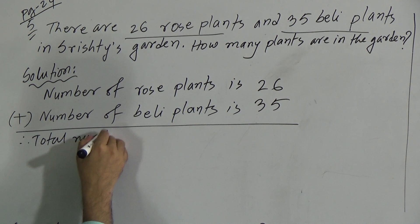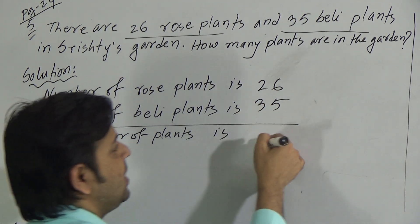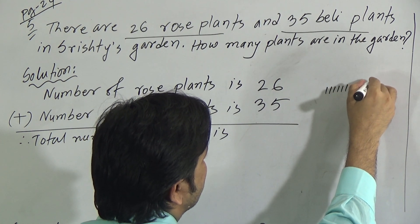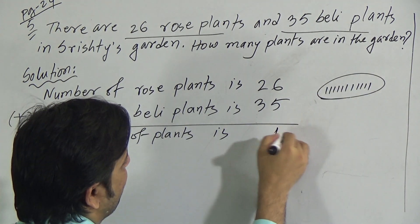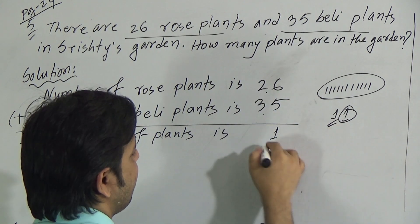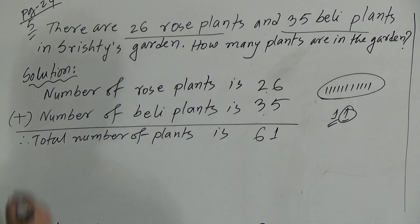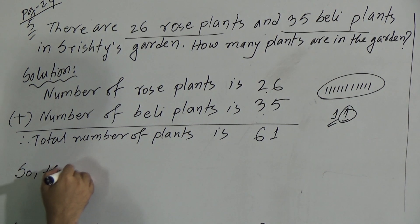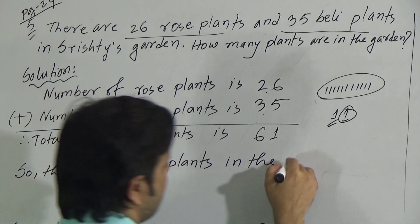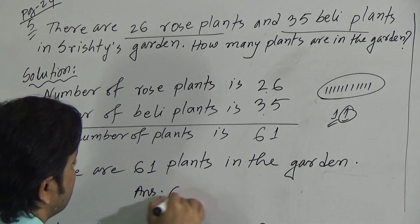We add now. Add 5 and 6 — that gives 11. So we write 1 and carry 1. Now 3 and 2 if we add, this will be 5, and carrying 1 makes 6. Total 61 plants. So we can say there are 61 plants in the garden.